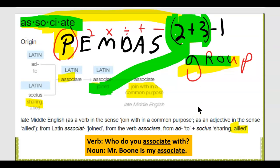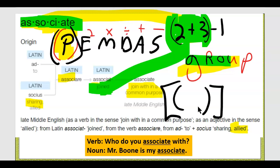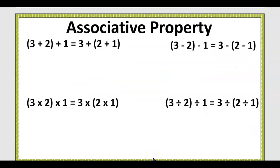In groups with PEMDAS, we use the P — parentheses, or brackets. Looking at the associative property, all they're doing is moving the brackets or parentheses. See, it's a three, a two, and a one on both sides — same order. Just the brackets have moved.